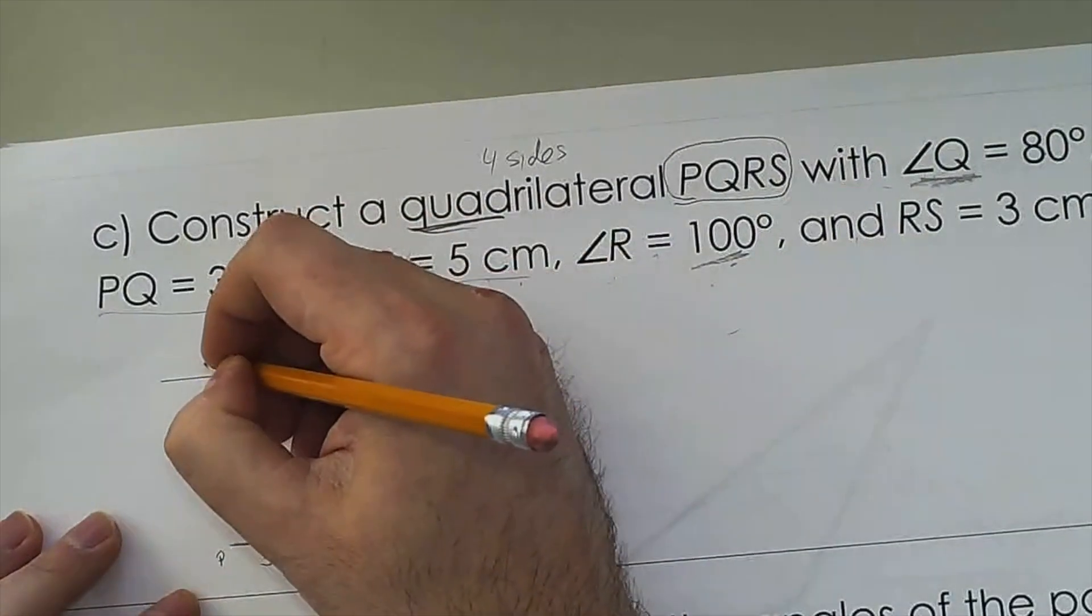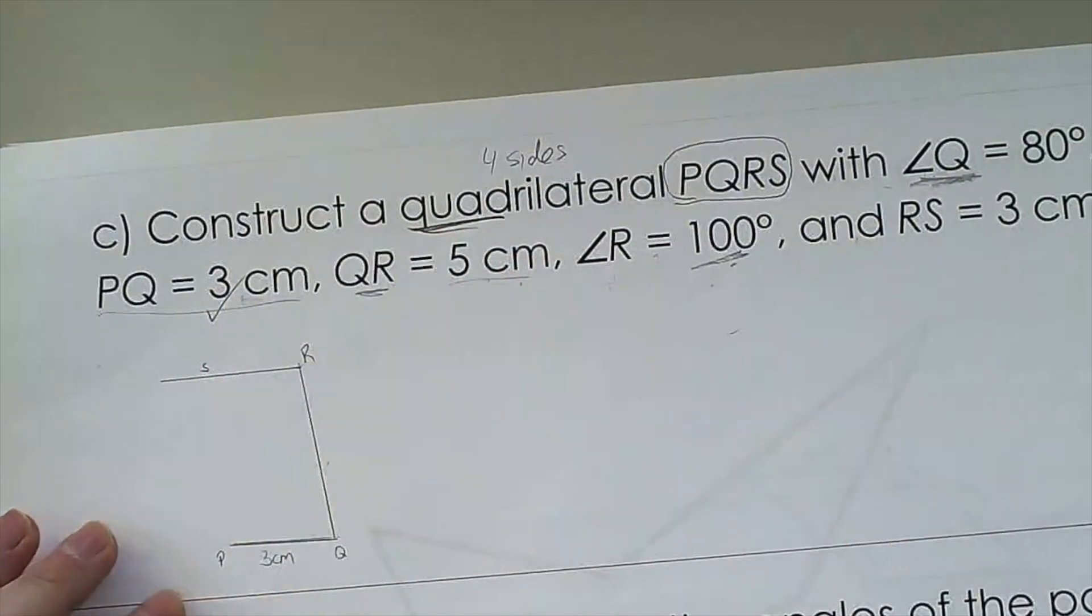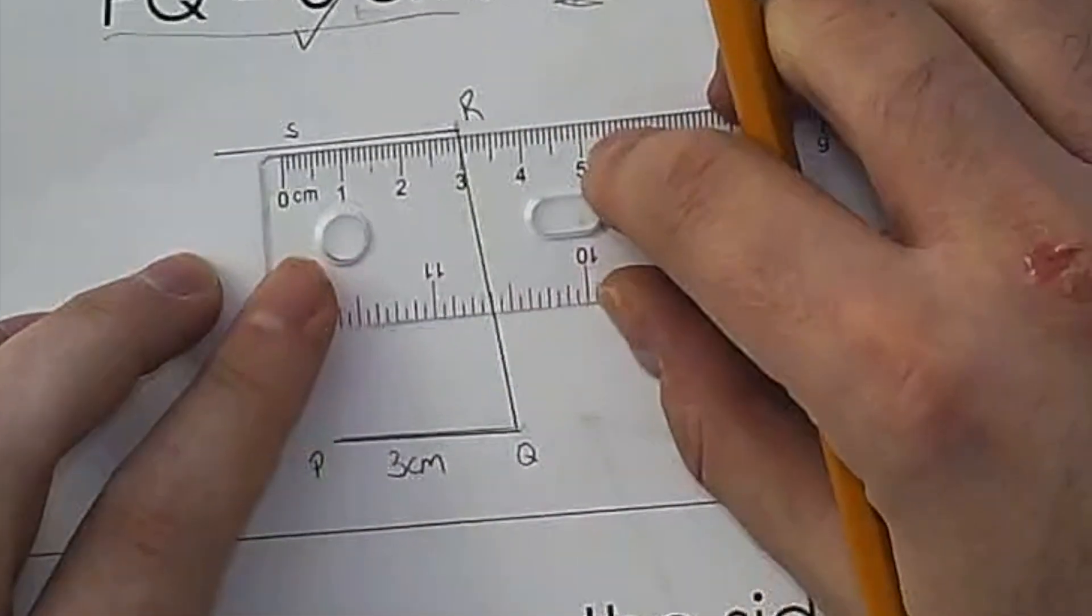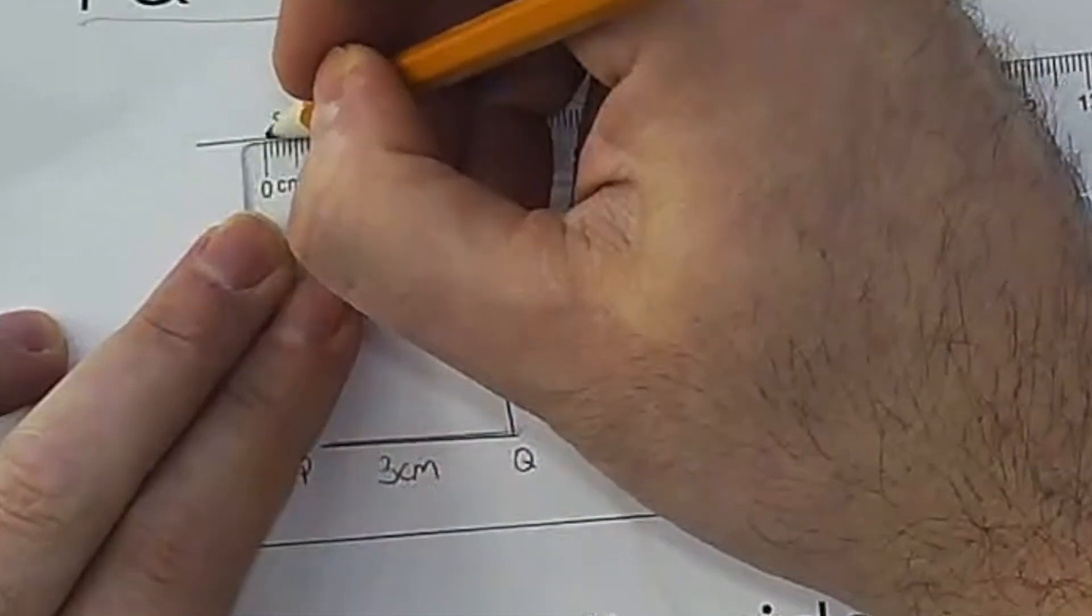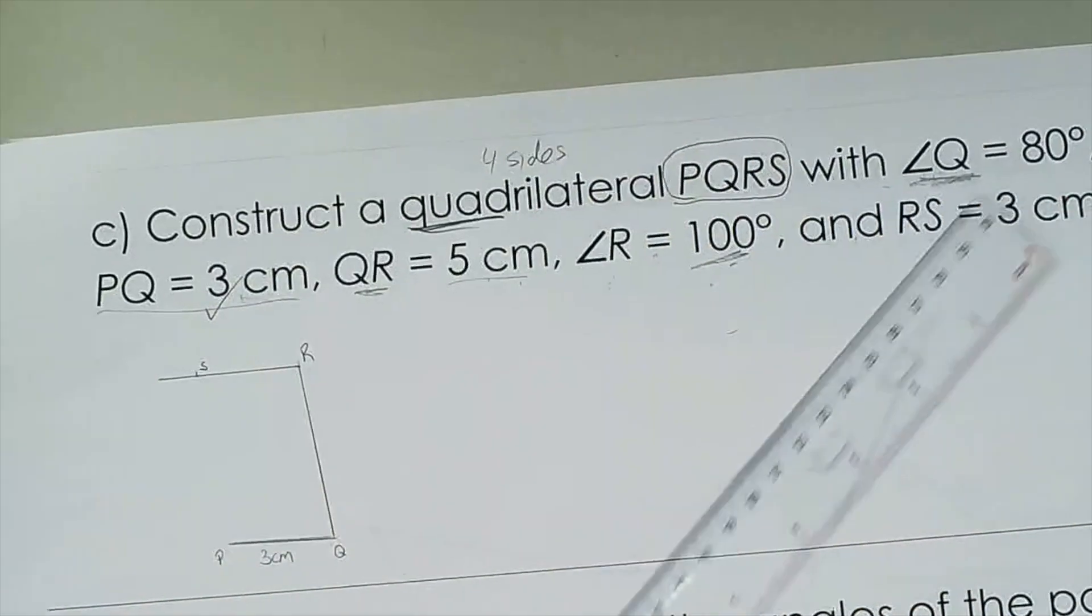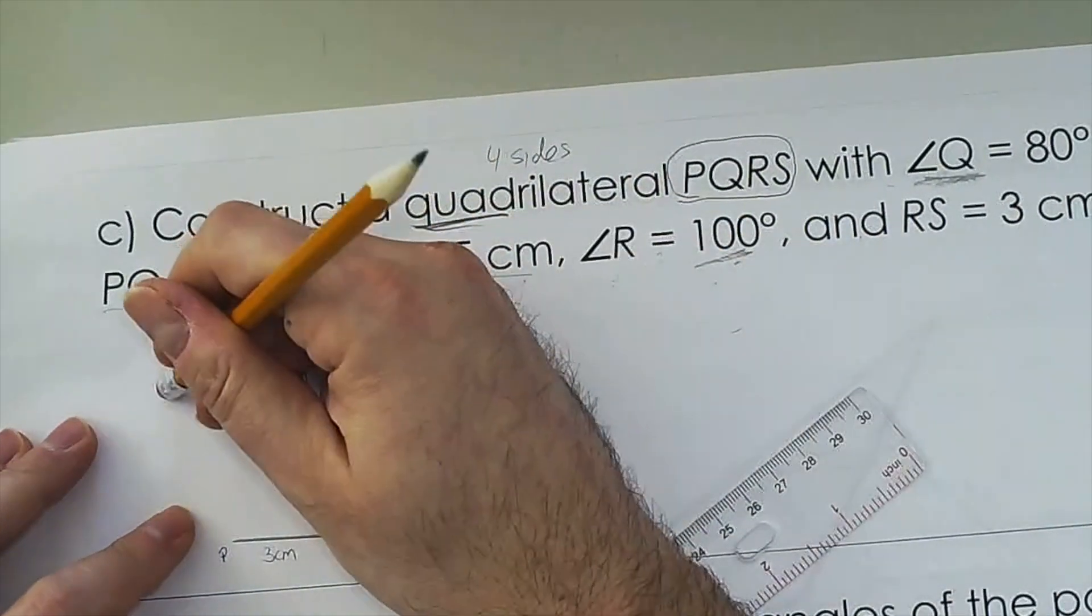RS, so this has to be S over here, needs to be 3 centimeters. So let's measure 3 centimeters from the end here. And 3 centimeters is right here. So I'm going to erase that extra line that I drew.